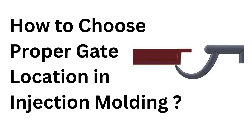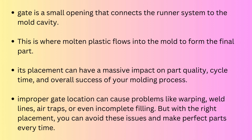In this video we will discuss how to choose the proper gate location and placement for our part. This is the most critical decision in injection molding because this small decision can make a big difference in the quality of our product. Gate is a small opening that connects the runner system to the mold cavity, through which we inject molten plastic into the cavity to get the final product after cooling.